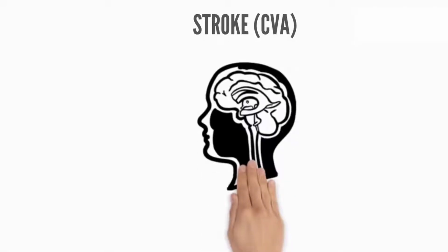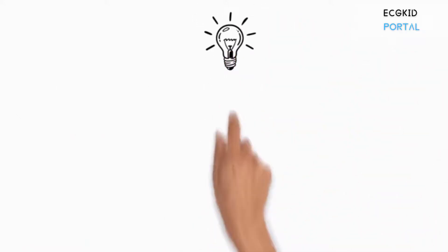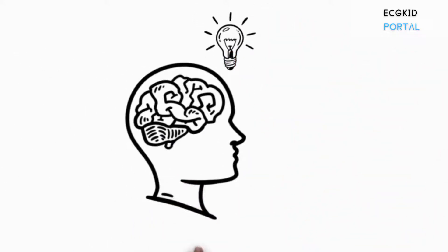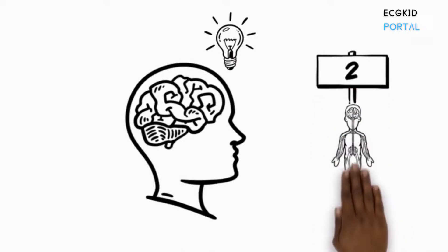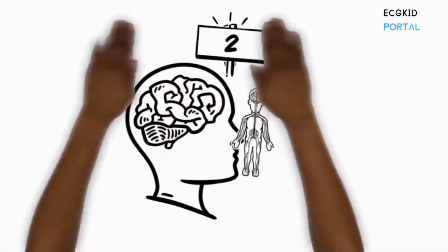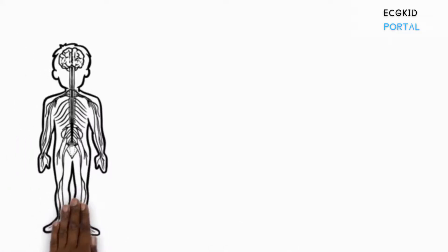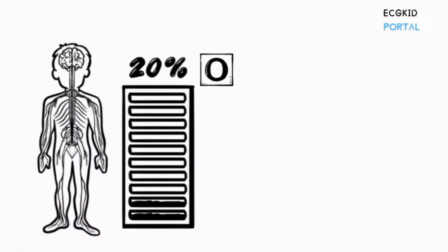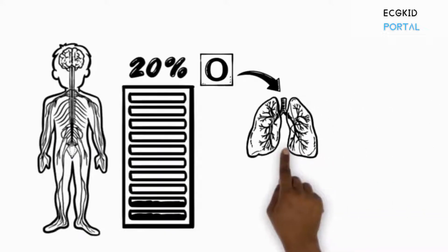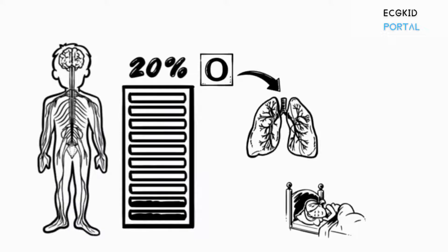In this video, we will discuss the stroke or cerebrovascular accident. First of all, let's understand how our brain works. Our brain contains only 2% of our body's mass, but it consumes about 20% of the oxygen we get. That's because it produces a tremendous amount of electrical impulses every second, which requires a tremendous amount of energy and oxygen — even when we are sleeping.